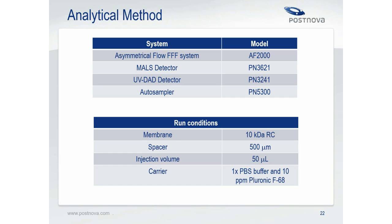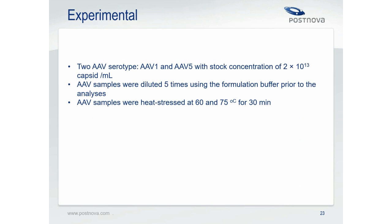The system components used in this study were the Postnova asymmetrical flow FFF system, Postnova 21-angle MALS detector, and a UV-Vis DAD detector. The carrier solution was a formulation buffer of 1x PBS plus a very low amount of pluronic surfactant. The sample injection volume was 50 µL. Two AAV serotypes — AAV1 and AAV5 — were studied, diluted five times using the formulation buffer prior to analysis. To induce aggregation, the diluted AAV samples were incubated at 60 and 75 degrees Celsius for 30 minutes.